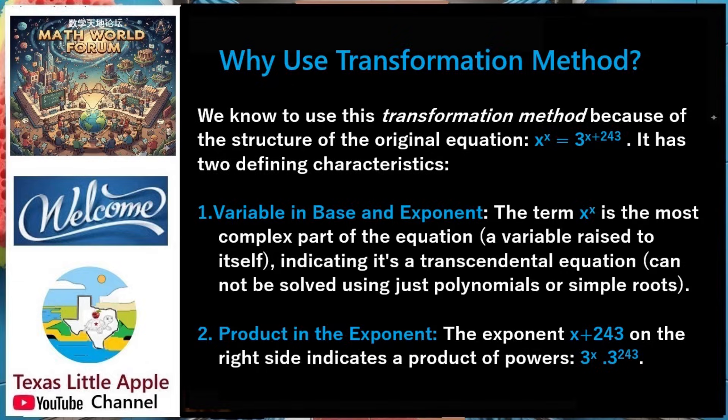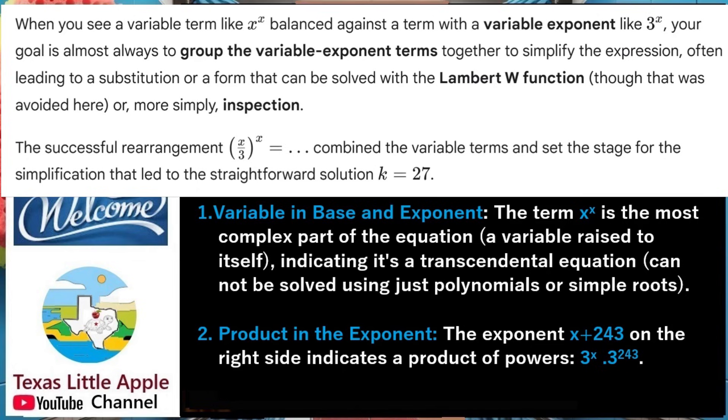Why use the transformation method? We use this method because of the structure of the original equation. The equation has two defining characteristics. First, variable in base and exponent: the term x to the power of x is the most complex part of the equation — a variable raised to itself — indicating it's a transcendental equation. That is, such an equation cannot be solved using just polynomials or simple roots.